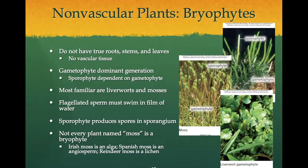Spanish moss, which hangs in grayish clusters from trees in the southeastern United States and Central America, is actually a flowering plant of the pineapple family. When we are talking about bryophytes, we are primarily talking about mosses, liverworts, and hornworts. Remember that in the bryophyte, the gametophyte is the dominant stage — all the leafy green structures are gametophytes, and the little upright structures are the sporophytes. The sporophyte in this case is completely dependent on nutrition derived from the gametophyte.